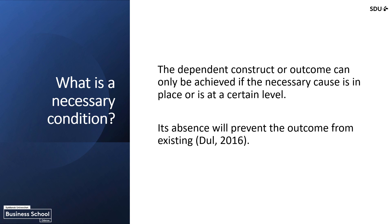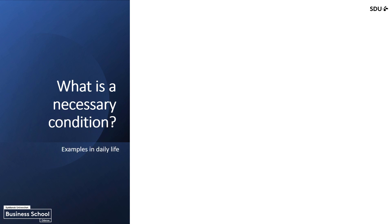Where do we find necessary conditions? Here are some examples in daily life. First, 'internet is necessary for watching this video.' Without internet, you cannot load this video. While having internet — the presence of the necessary condition — does not guarantee the outcome, because you probably don't have the time or a digital device. But not having internet will make it impossible to achieve the outcome of watching this video.